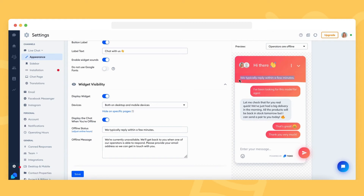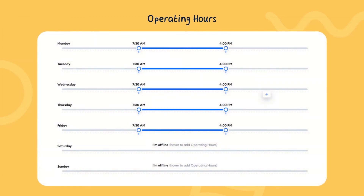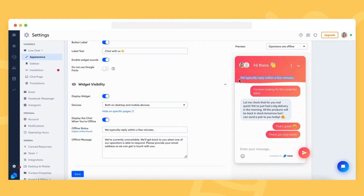If you don't want to change your status manually all the time and you have a regular schedule, you can set up your operating hours. The operating hours will automatically switch your operator status according to the schedule you create. This is a great way to manage your status if you have specific working hours — you won't need to worry about switching to offline mode or logging out whenever you end your shift.